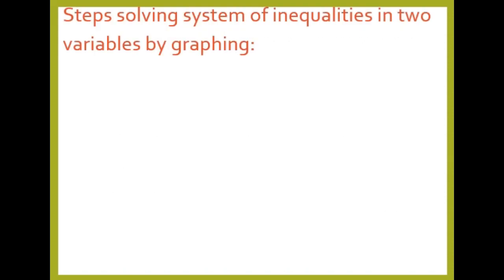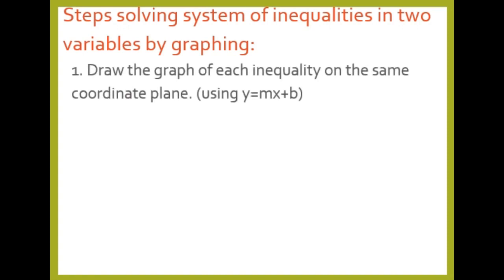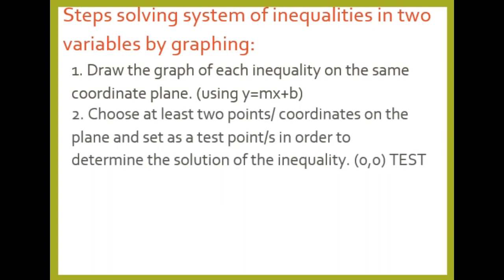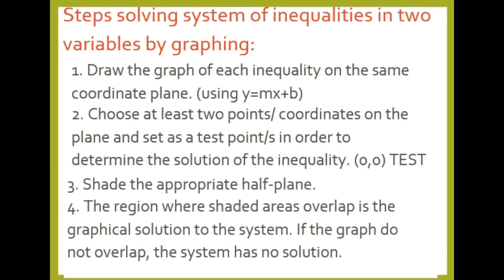Here are the steps in solving a system of inequalities in two variables by graphing. First, draw the graph of each inequality on the same coordinate plane using y = mx + b. Second, choose at least two points as test points to determine the solution — use the (0,0) test. Third, shade the appropriate half-plane. Fourth, the region where shaded areas overlap is the graphical solution. If the graphs do not overlap, the system has no solution.